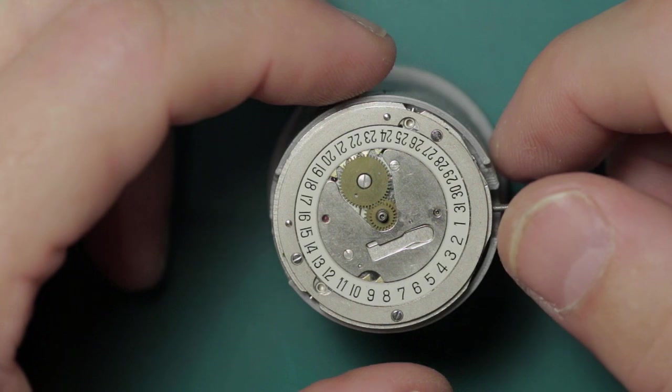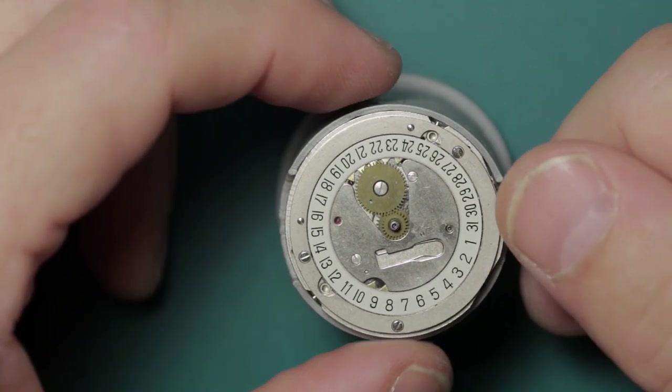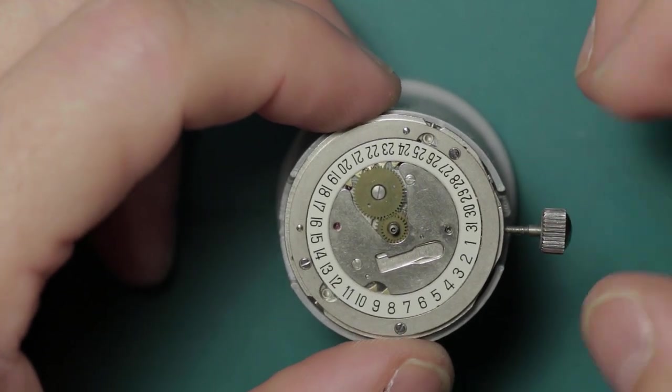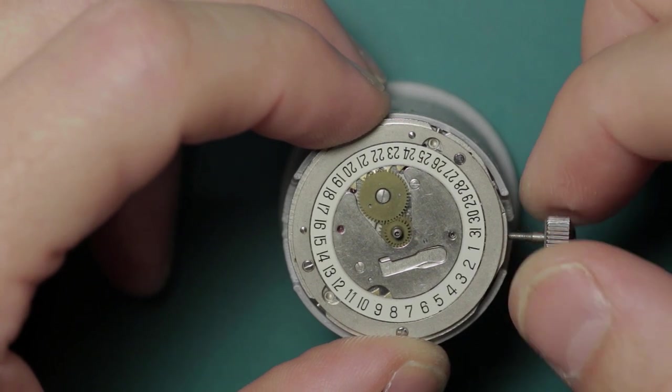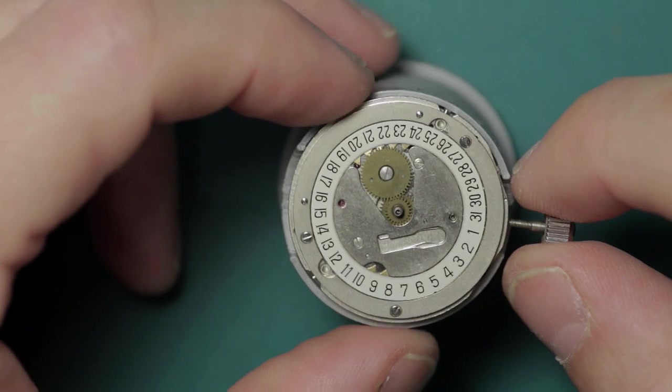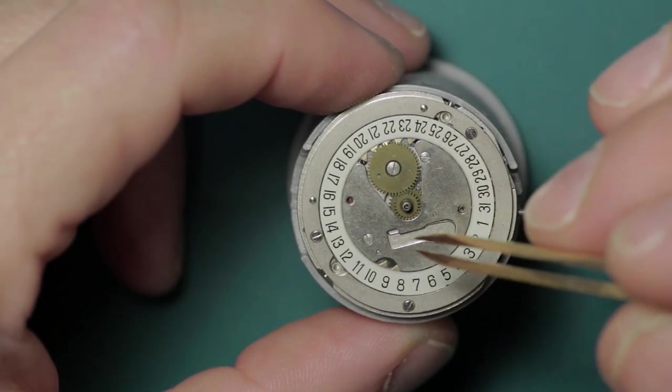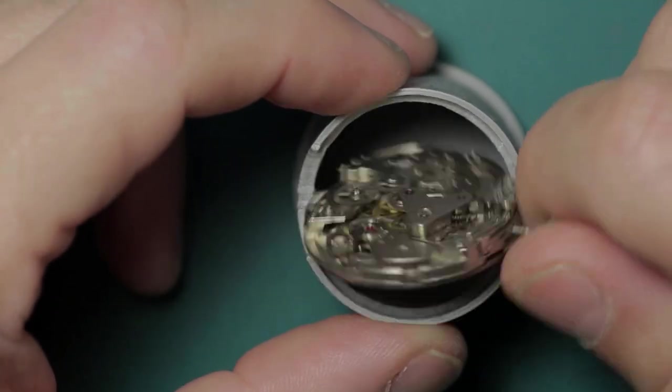Often you'll hear people say that the Valjoux 7730 or the Valjoux 7733 is the movement that the Poljot 3133 is based on. That's not actually correct. It's the 7734 because this is the model that has the calendar complication, the date ring. It is otherwise the same but you've effectively got this additional module on the front.